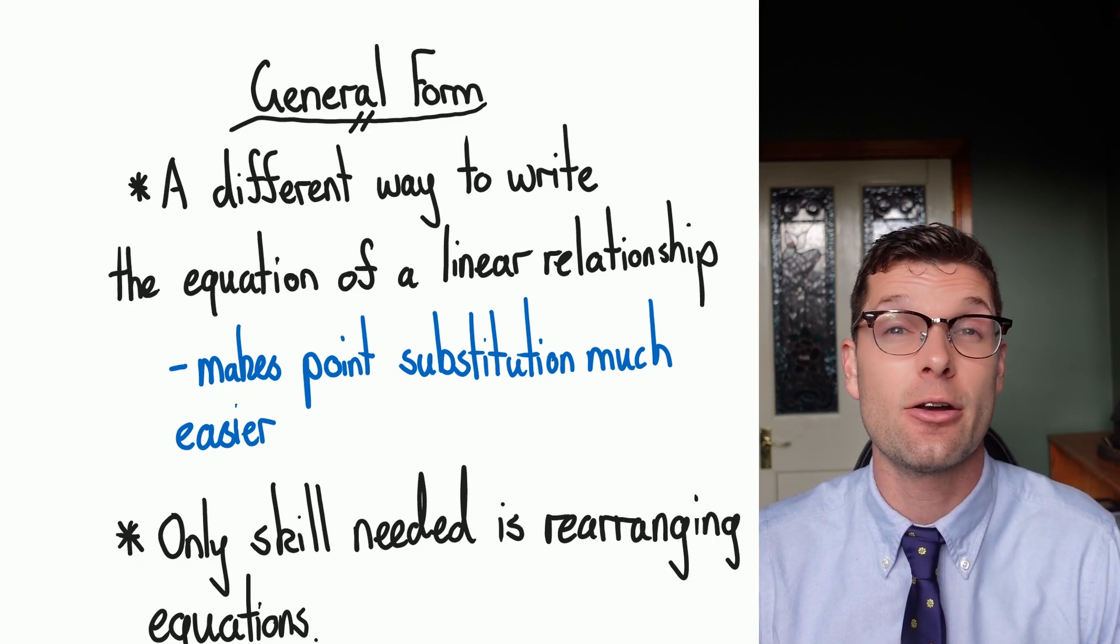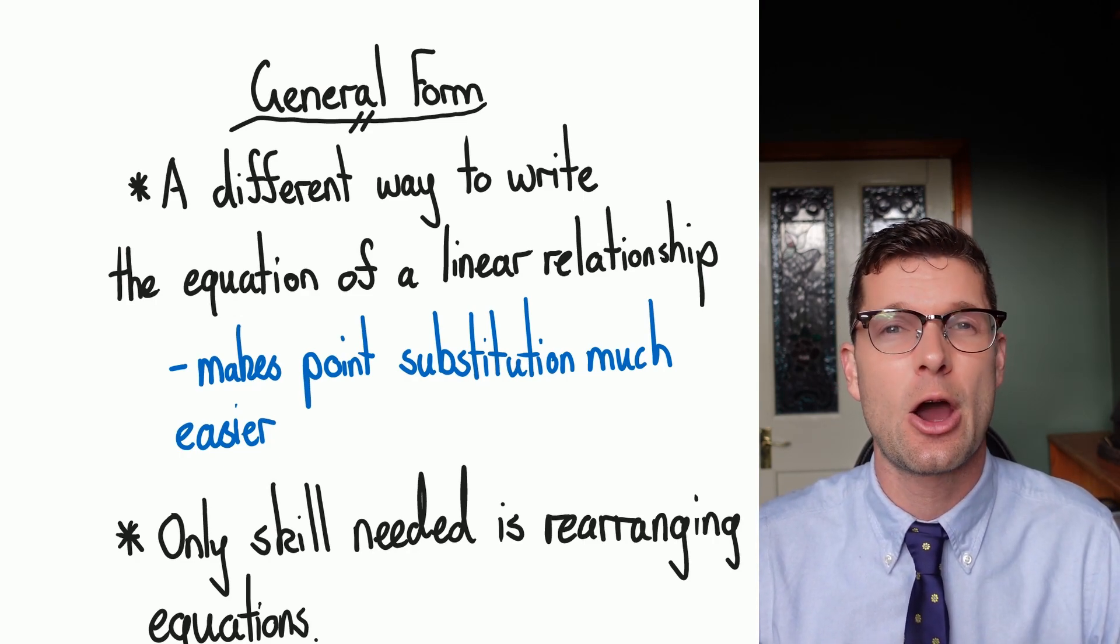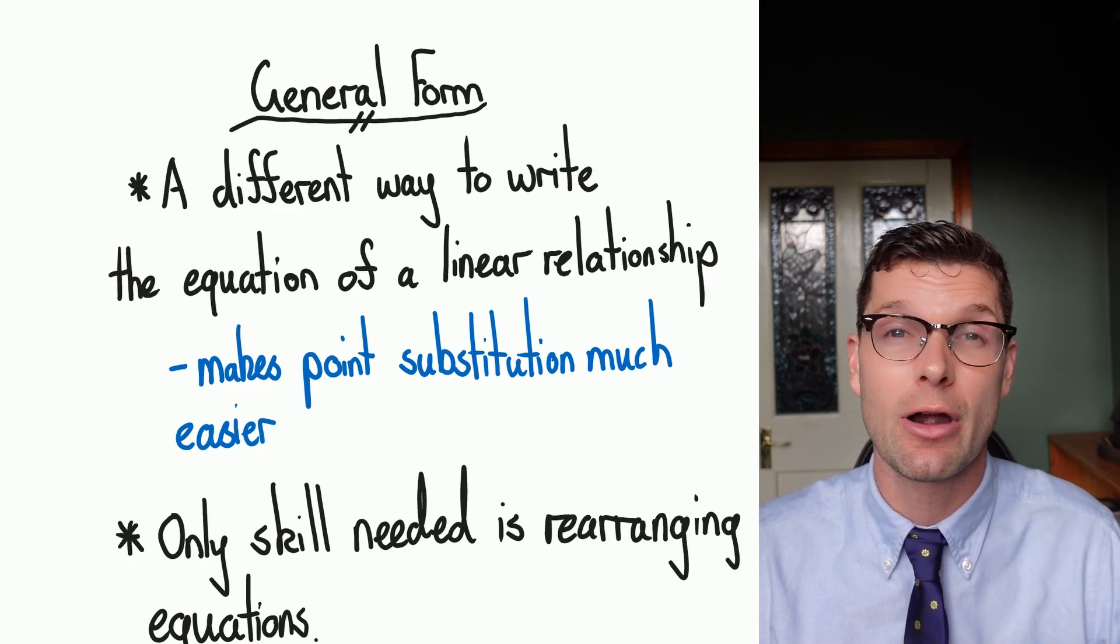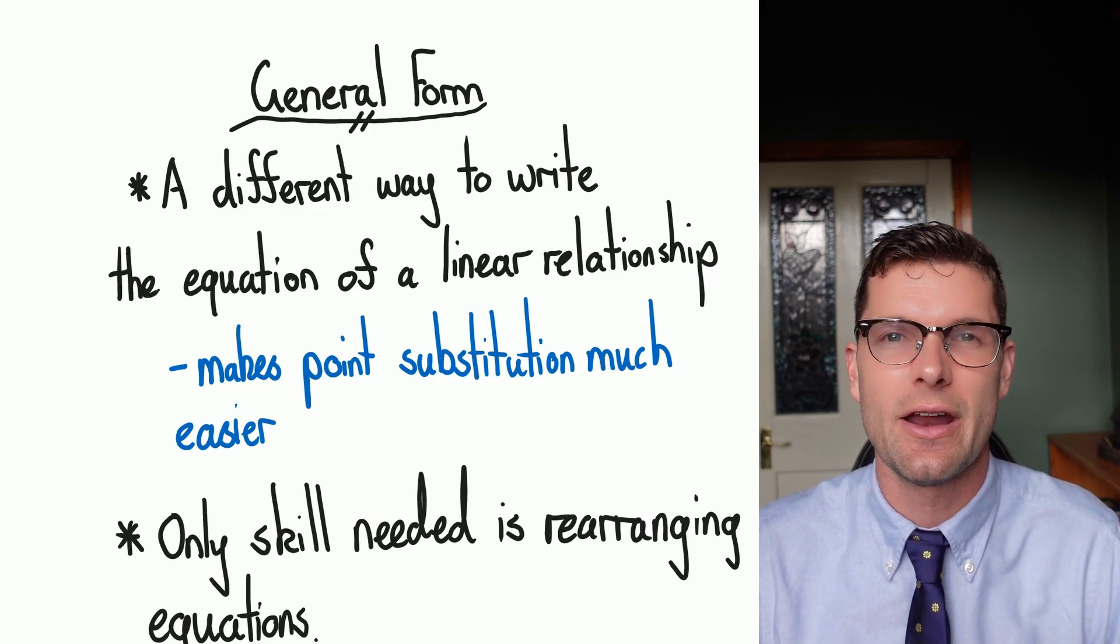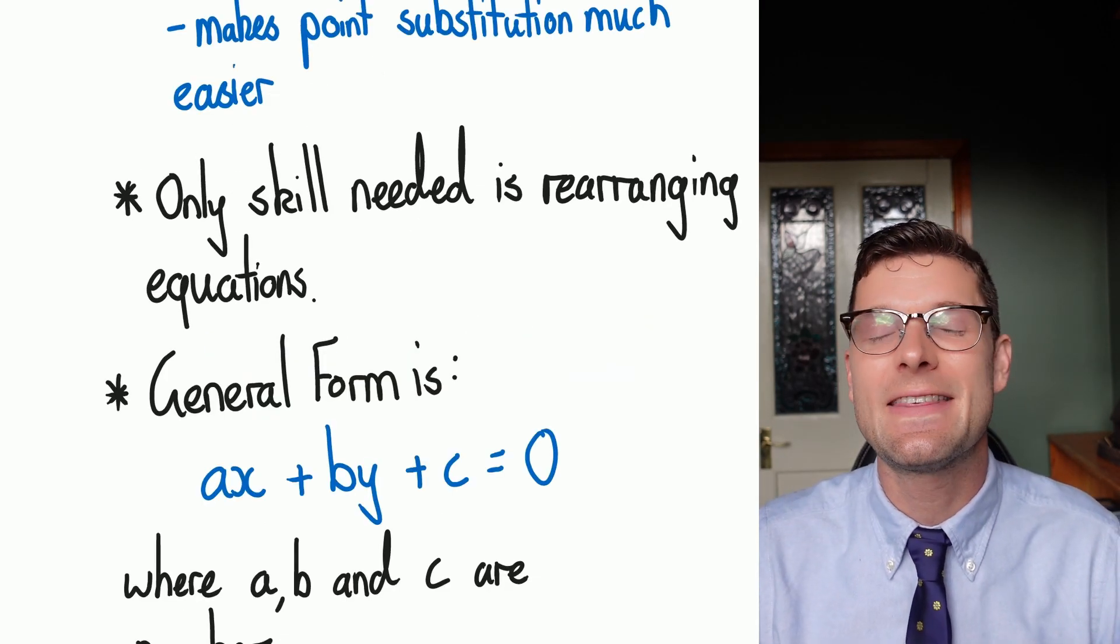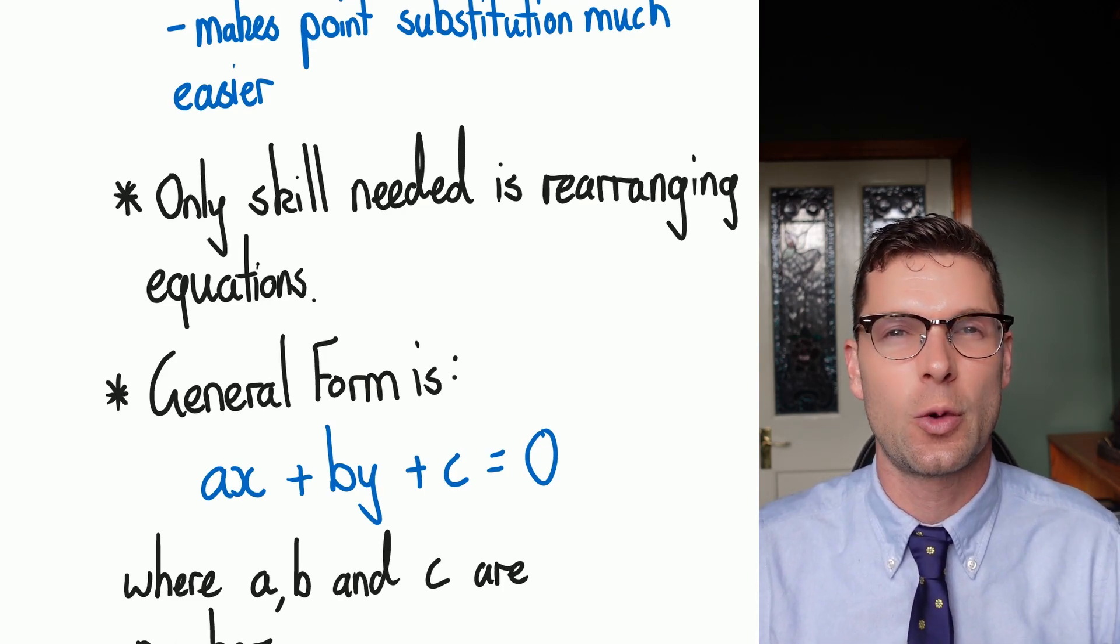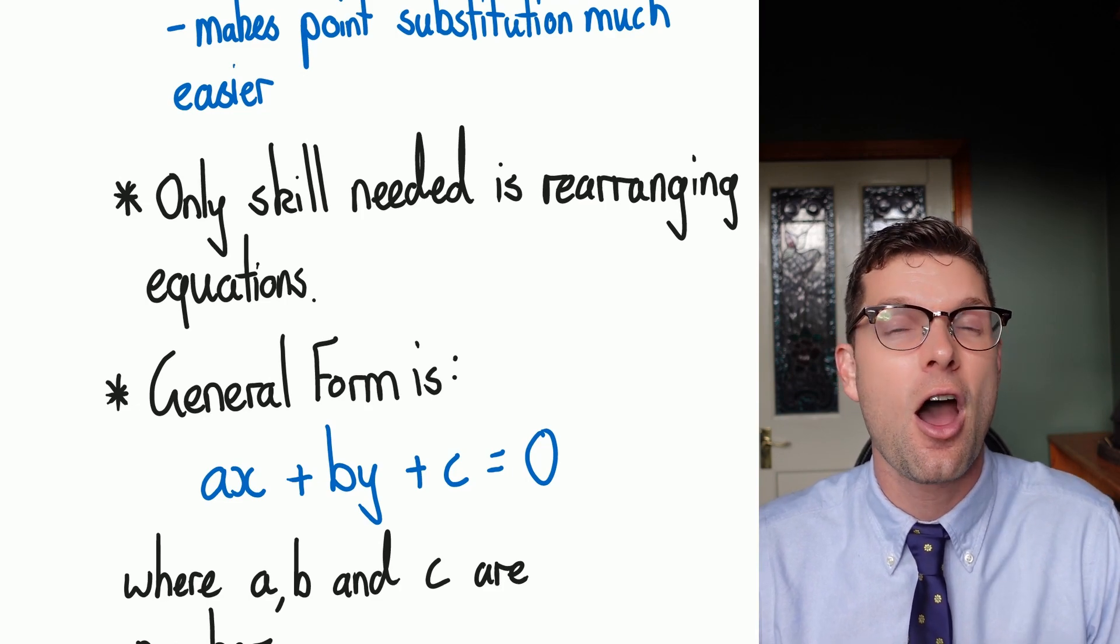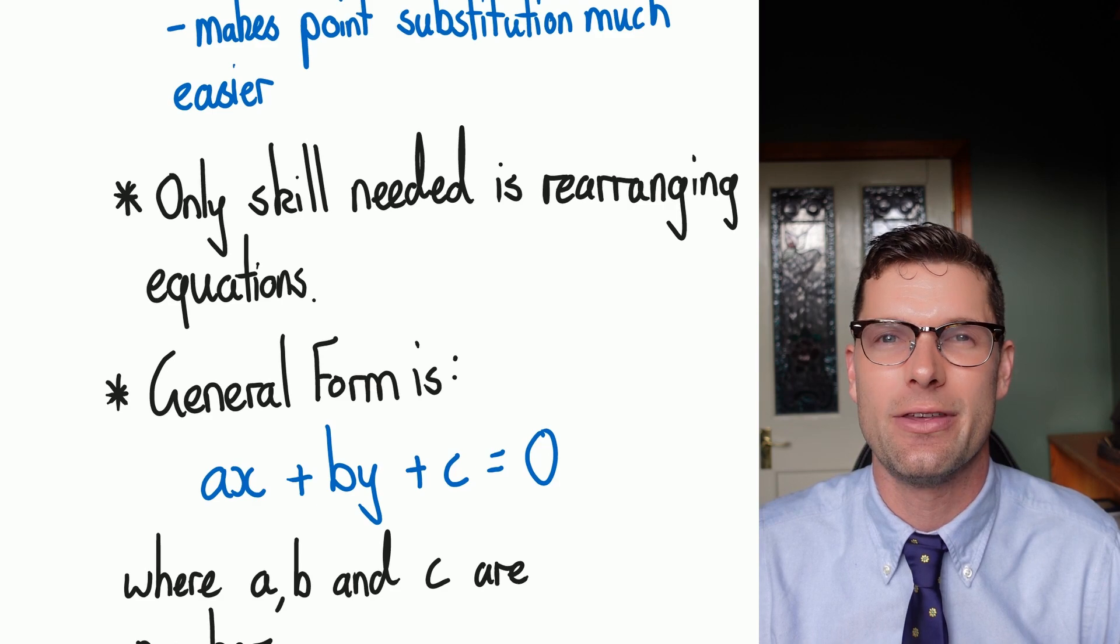The reason that we need to learn how to write these in different ways is because this general form can really help us find out information incredibly quickly, especially when we're substituting in points to find out whether they're on a line or not. The good thing about this is that the only skill we need to know is how to rearrange equations quickly. If you're not 100% sure on how to do that, I've got a video linked in the description below that should be able to help you out with it.